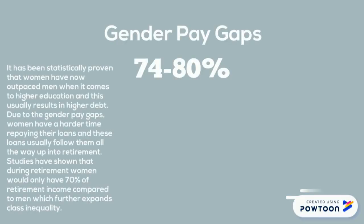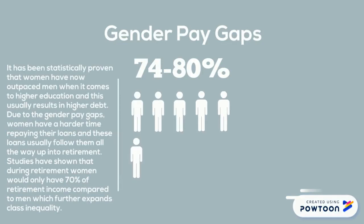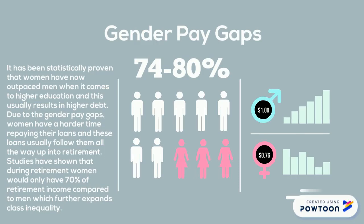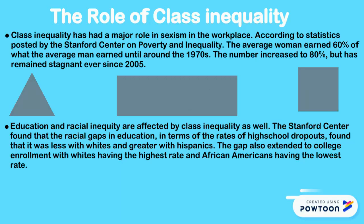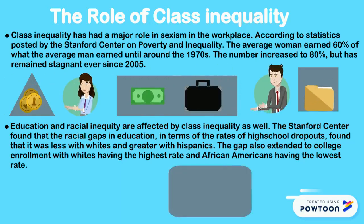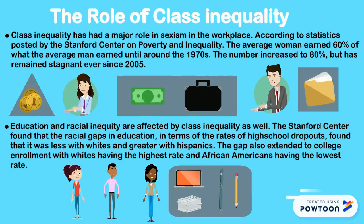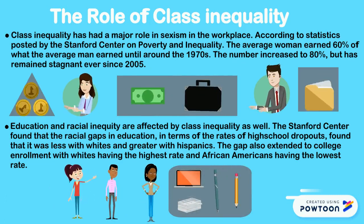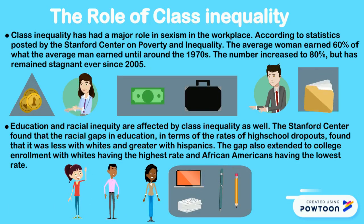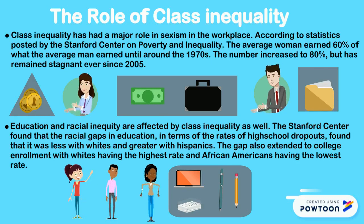Another example of class inequality is the wage gap between men and women. Women aged 35 and older earn approximately 74 to 80% of what their male counterparts earn, and women also earn only 76 cents to the dollar that men make. Class inequality has had a major role in sexism in the workplace. According to the Stanford Center on Poverty and Inequality, the average woman earned 60% of what the average man earned until around the 1970s, increasing to 80% but remaining stagnant ever since 2005.